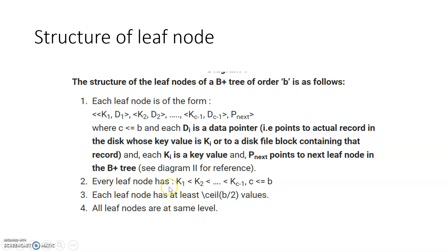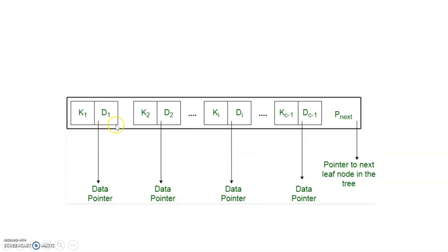The data pointer 'D' points to the actual record on disk, and there is a pointer to the next node. The keys in the leaf nodes are arranged in sorted order. Each leaf node must have at least ⌈b/2⌉ values if the order is 'b'. All leaf nodes are at the same level. The structure is: K1, data pointer, K2, data pointer, and so on, plus one pointer to the next node. In B+ tree, all internal and root nodes act as index nodes; all records are stored only in the leaf nodes.